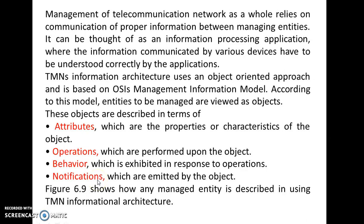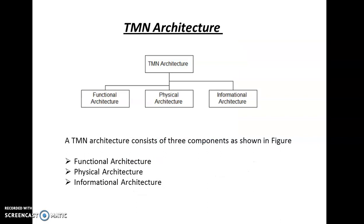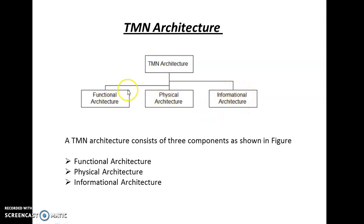To conclude, we have discussed the three architectures of TMN: Functional Architecture, Physical Architecture, and Information Architecture. In Functional Architecture, functional blocks are built. In Physical Architecture, actual physical equipment are built. And Information Architecture ensures proper communication of information so that network management operates efficiently. Thank you.